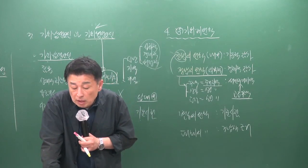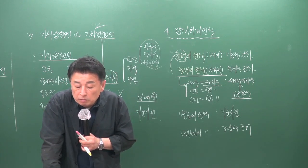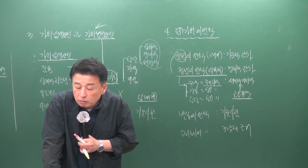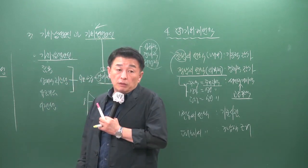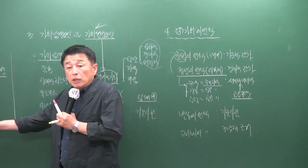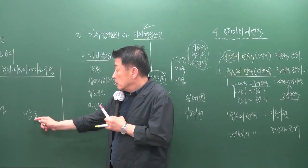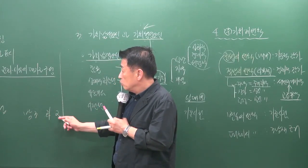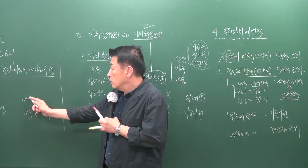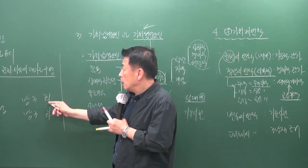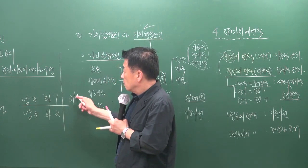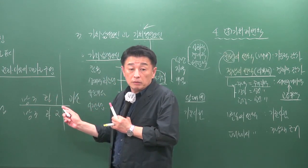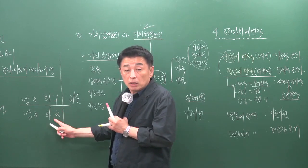14번 문제에서 부동산의 초과설비와 과소설비를 판정하는 데 직접 적용되는 원칙이 균형의 원칙입니다. 요즘 20평형 아파트는 방 3개에 화장실이 2개이지만, 옛날에 지어진 것은 방 3개에 화장실이 1개라면 이는 과소개량이 된 것으로 밸런스가 맞지 않습니다.